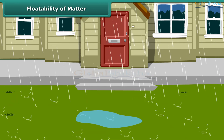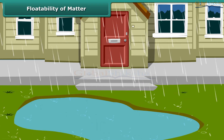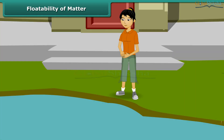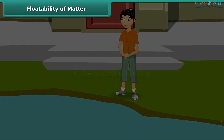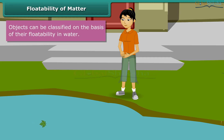It has rained heavily and a huge puddle has formed in front of Prachi's house. She is very excited. She first throws a stone, which disappears inside the puddle. Then she throws a leaf, which starts floating. The stone sinks because it is heavy; the leaf remains afloat because it is light. Thus, objects can be classified on the basis of their floatability in water.